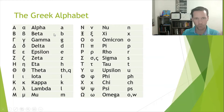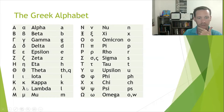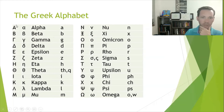I'll go ahead and say them all quickly now, and then tell you how the chart is set up before we look at individual letters. The letters are: alpha, beta, gamma, delta, epsilon, zeta, eta, theta, iota, kappa, lambda, nu — that's the next column — nu, xi, omicron, pi, rho, sigma, tau, upsilon, phi, chi, psi, and omega.